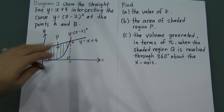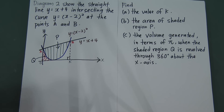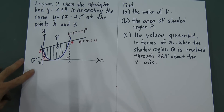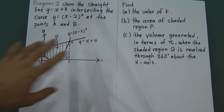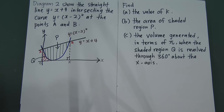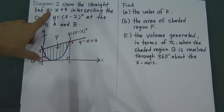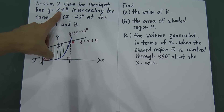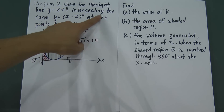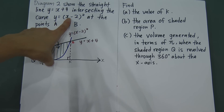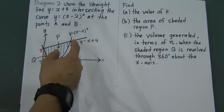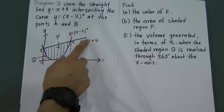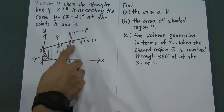This is one of the past year questions for integration. This is the Paper 2 question, and it will give you 8 to 10 marks, depending on the questions. Let's have a look at this diagram and this question. Diagram 2 shows the straight line y equal to x plus 4, intersecting the curve y equal to x minus 2 squared at points A and B. This curve is intersecting with this straight line at two points: point A and point B.